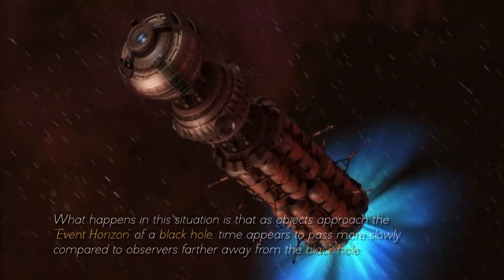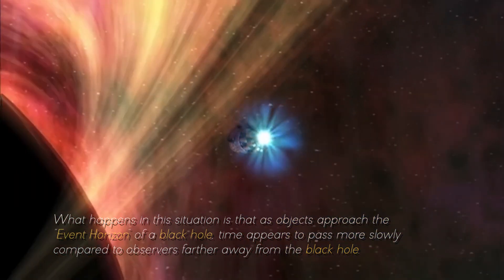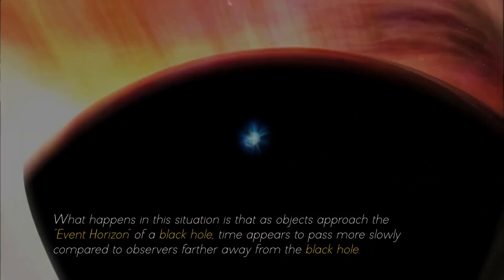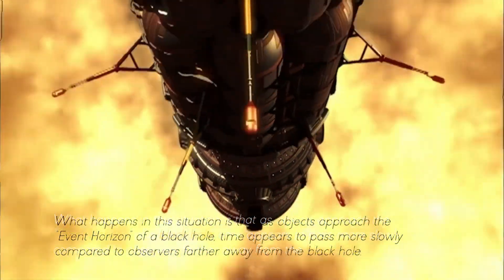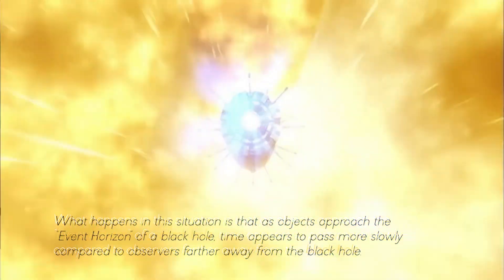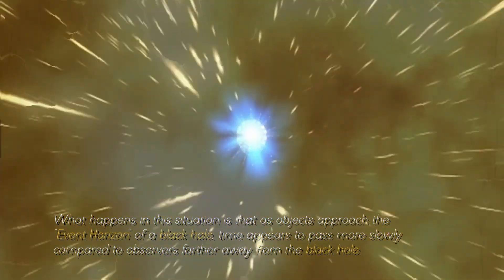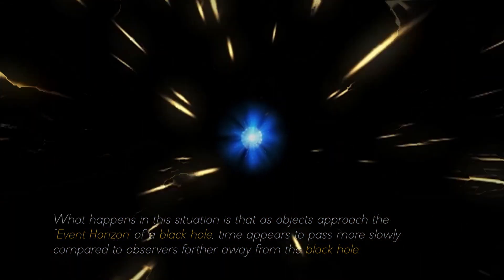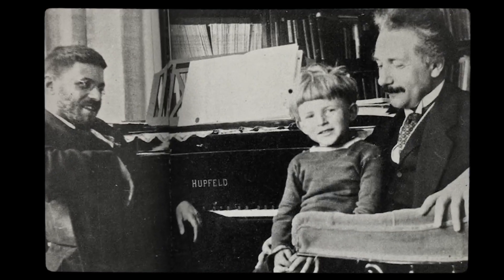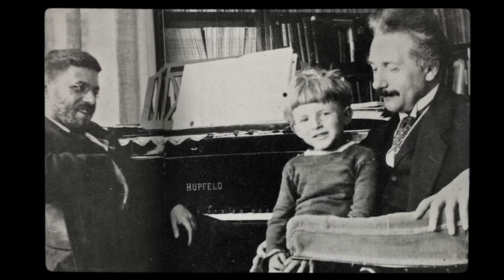What happens in this situation is that, as objects approach the event horizon of a black hole, time appears to pass more slowly compared to observers farther away from the black hole. This phenomenon, predicted by Einstein's theory of relativity, is due to the warping of space-time caused by the intense mass of the black hole.